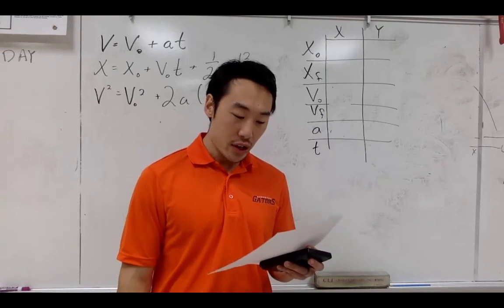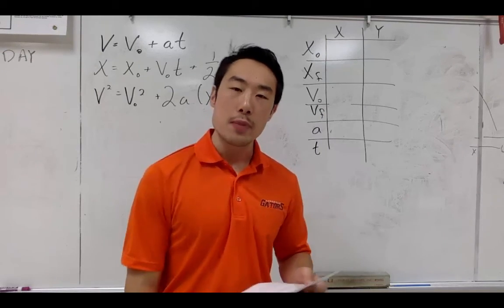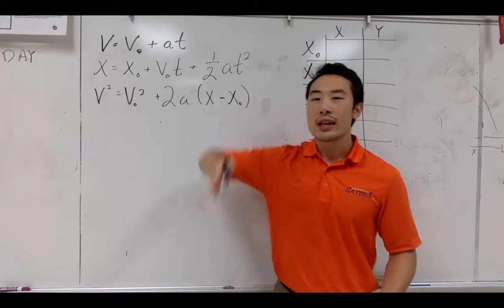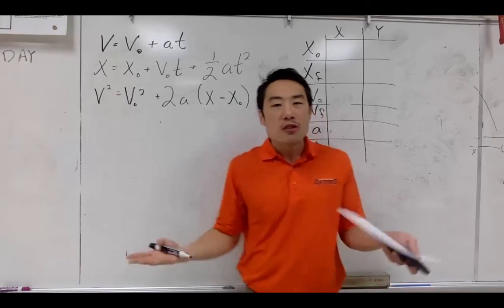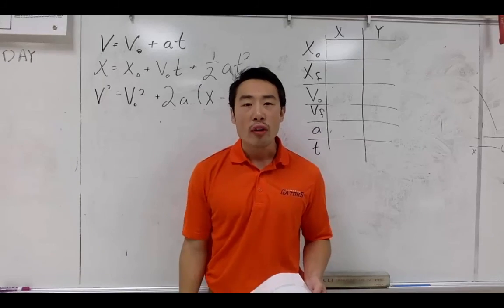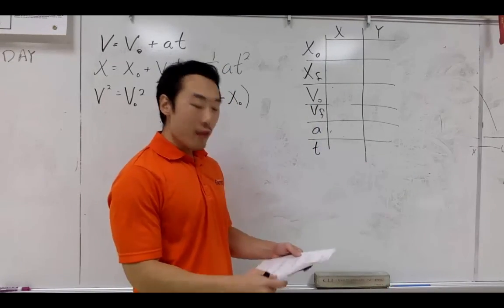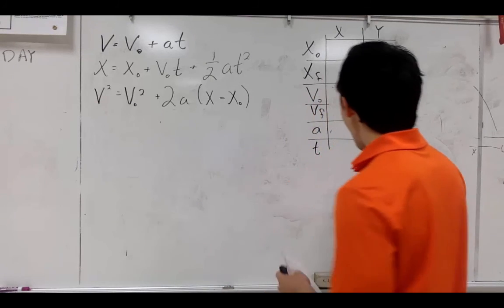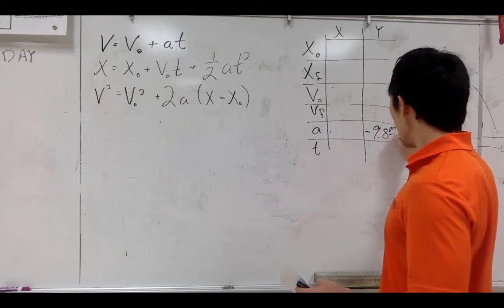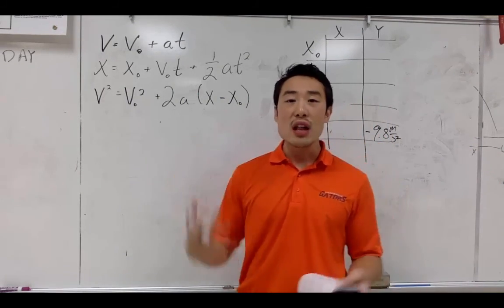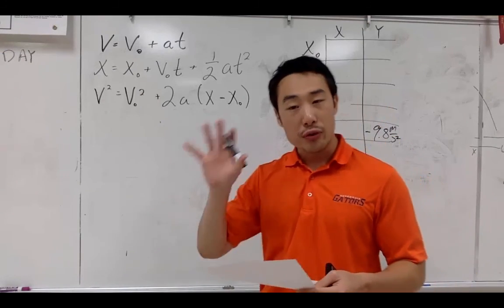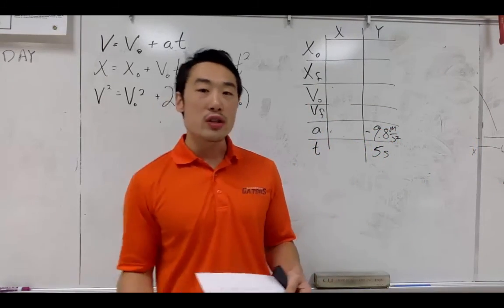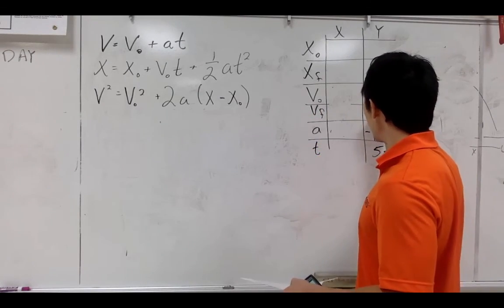It says a ball is dropped off of a very tall canyon ledge. Gravity accelerates the ball at 9.8 meters per second squared. How fast is the ball traveling after five seconds? Now I want to think about whether the object is moving in the x or the y direction. Because it's an object that is falling, it's falling in the y direction, so I'm going to fill my table of variables for the y variables. It asks how fast the ball is traveling — so we are looking for v_f.